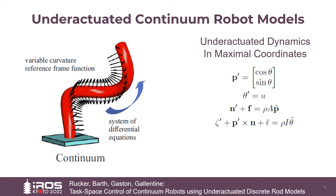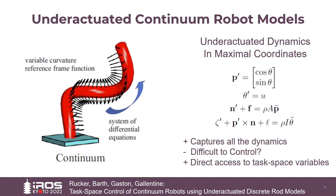More descriptive models of continuum robots can be derived using the partial differential equations of elastic rods. This usually leads to some discretized model with high resolution expressed in maximal coordinates — that is, position and orientation are included explicitly as state variables, and there are some constraints. The benefits of this approach are that it captures all the underactuated variable curvature dynamics and that we have direct access to task space variables. Historically, such models have been considered not ideal for control due to their complexity and underactuated nature, but we aim to show how underactuated models in maximal coordinates are quite convenient for formulating task space control schemes directly.